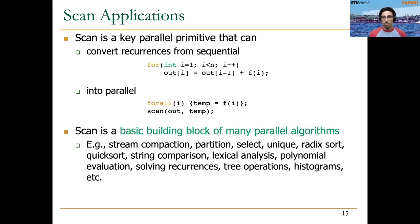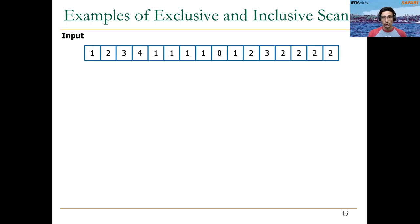Scan is a basic building block for many important parallel algorithms, for example string compaction, partition, select, unique, radix sort, quicksort, and many others. Let's see one example of exclusive and inclusive scan with a toy representation of the input and output arrays.